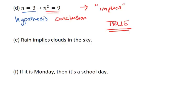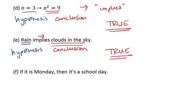For the next one, we have rain implies clouds in the sky. Implies is the same as our little arrow. Our hypothesis then is rain, and our conclusion is that there are clouds in the sky. We assume the hypothesis is true, that there is rain. Does that mean there must be clouds in the sky? It does, so the entire conditional statement is true.